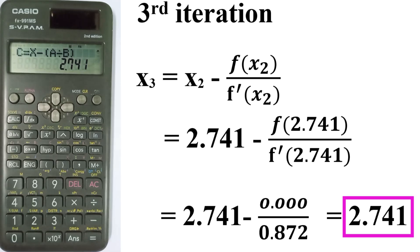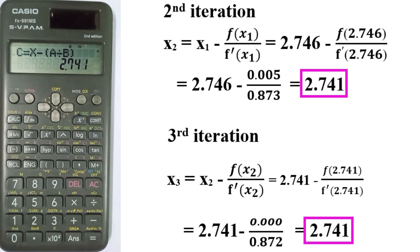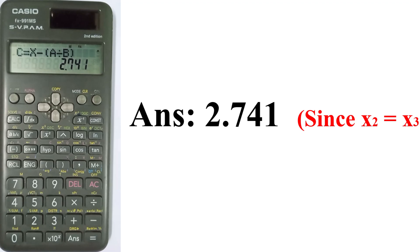Again equals to get C: x2 = 2.741. Now compare x2 and x1 — they differ in the third decimal place. For the third iteration, calculate: f(x) gives A = 0.000, f'(x) gives B = 0.872, and C gives x3 = 2.741. Comparing x3 and x2, we get the same value, so we stop. The root of the equation is 2.741.